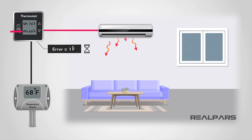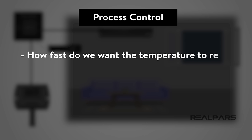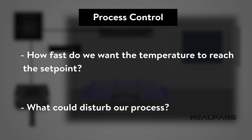In the simplest terms, our house is too cool, and the controller tells the heating unit to turn on. We're trying to get to 70 degrees. The unit will remain on until the error in our process becomes 0. Now, let's say that someone opens a window in the house and it's very cold outside. This disruption in the process is called disturbance. The factors in this process control may be how fast do we want the temperature to reach the set point, and what could disturb our process. Adjusting our controller's parameters is how we deal with those factors.